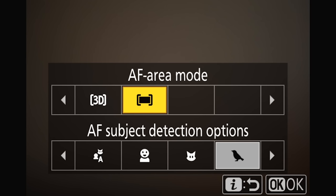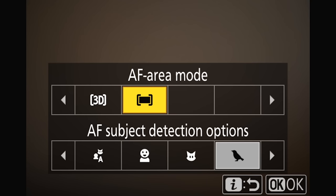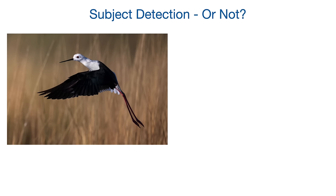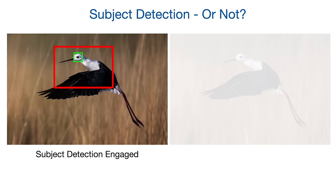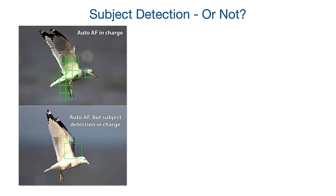Our next stop is to turn on subject detection. You can do that through the photo shooting menu or via the AF area mode subject detection option on the i menu. If you're shooting birds in flight, set it to Bird. It's usually better with it on than with it off. Keep in mind that subject detection is a refinement of your current AF area — in the viewfinder you'll see a little green box on the subject when subject detection has taken over and is only focusing on that small area.